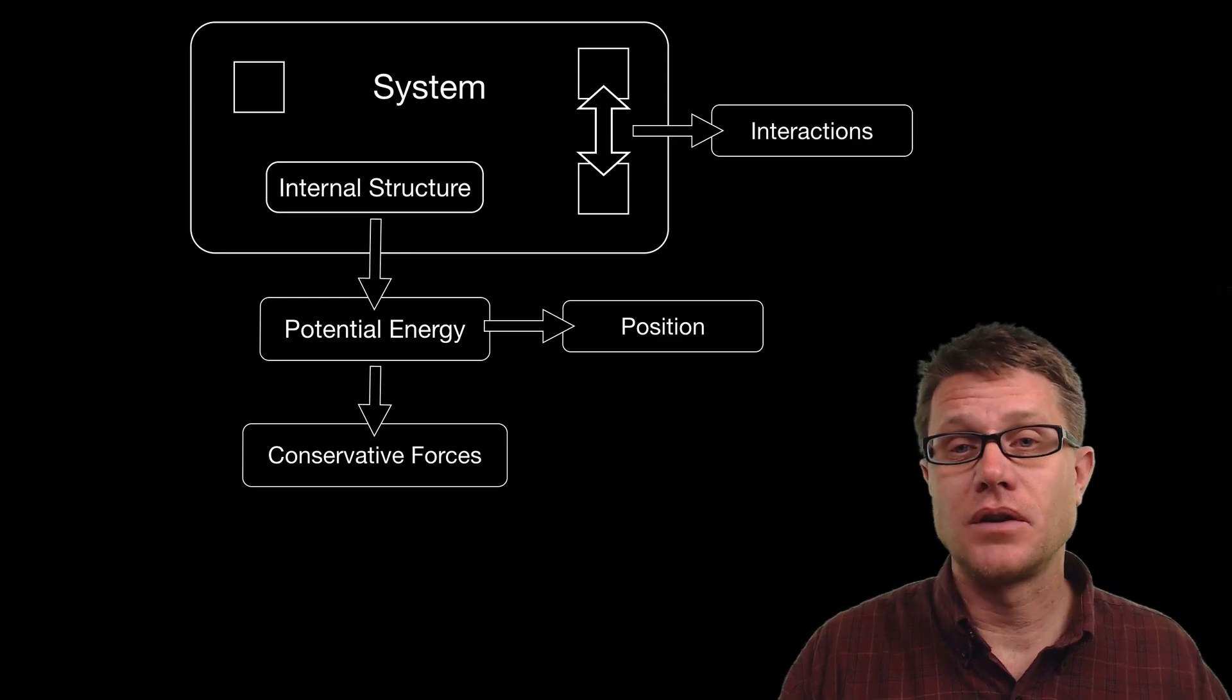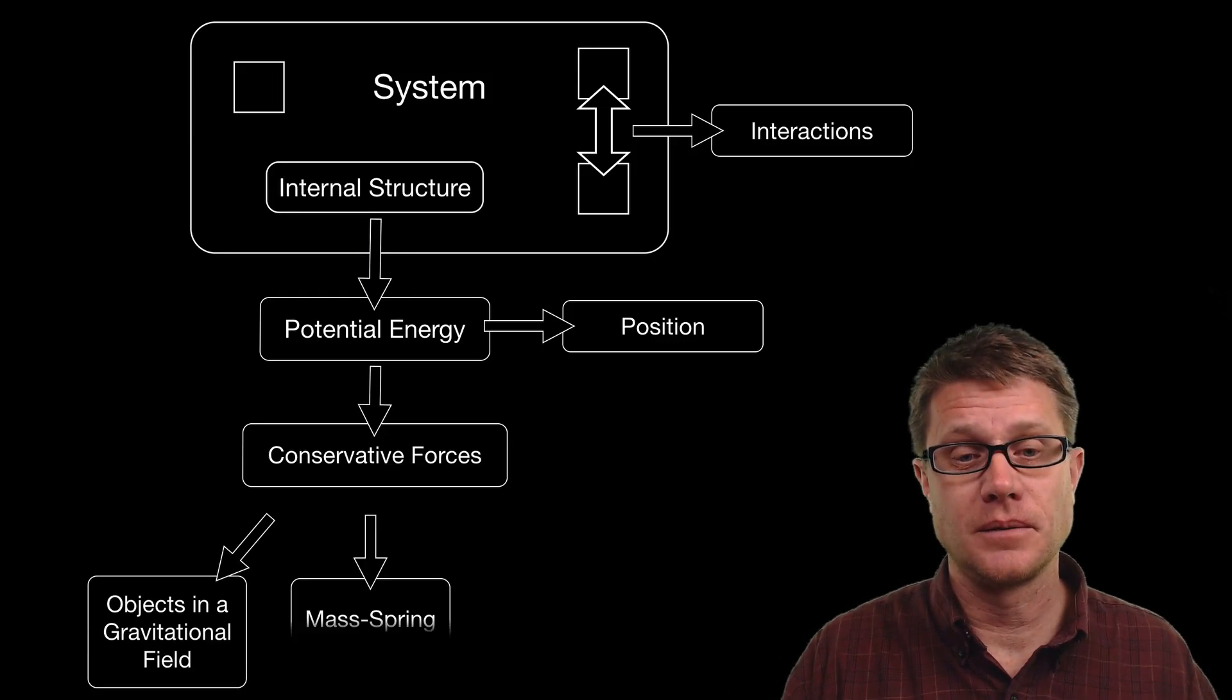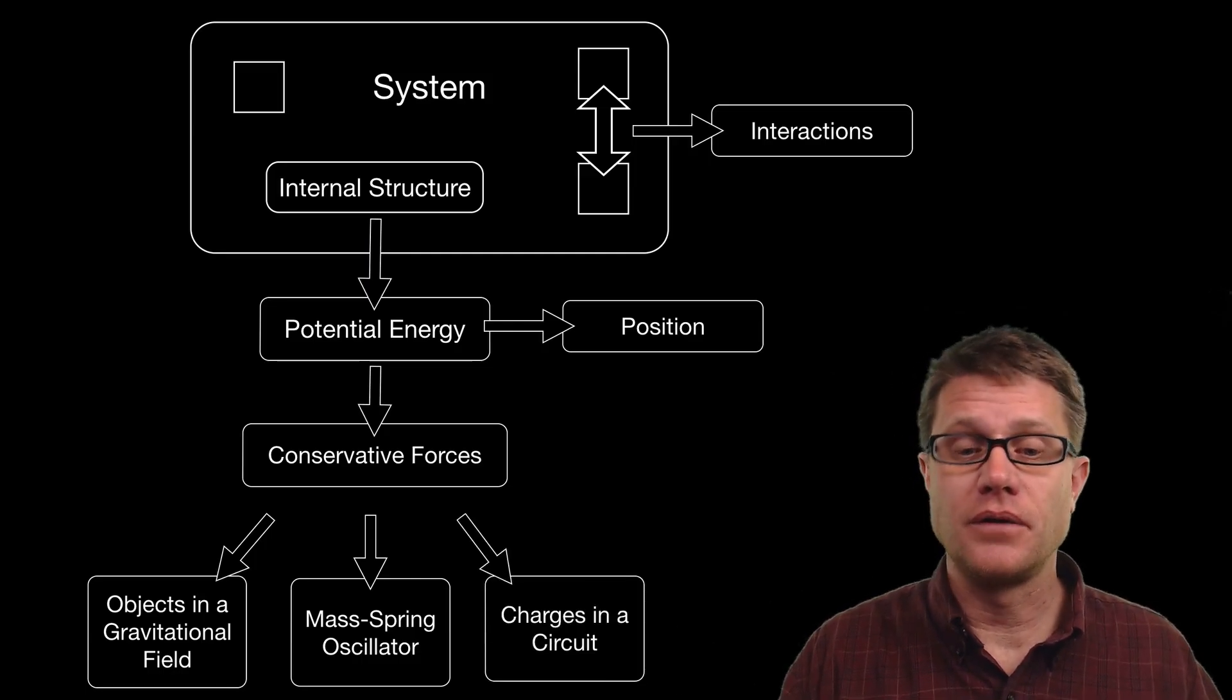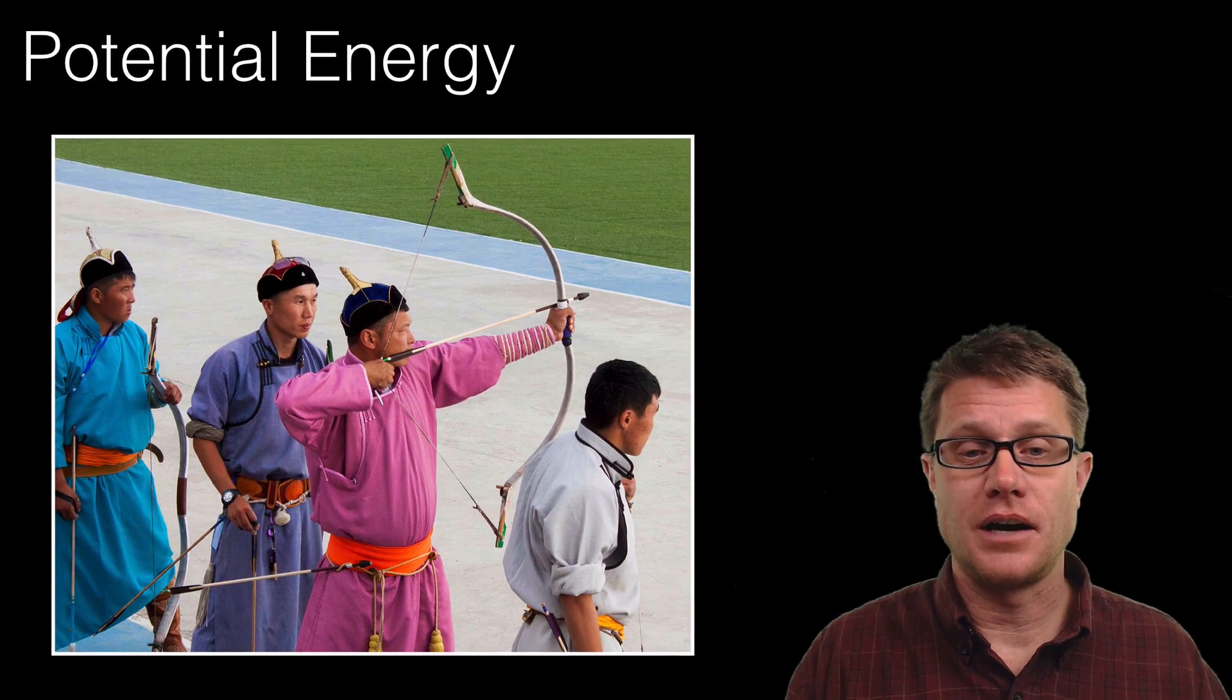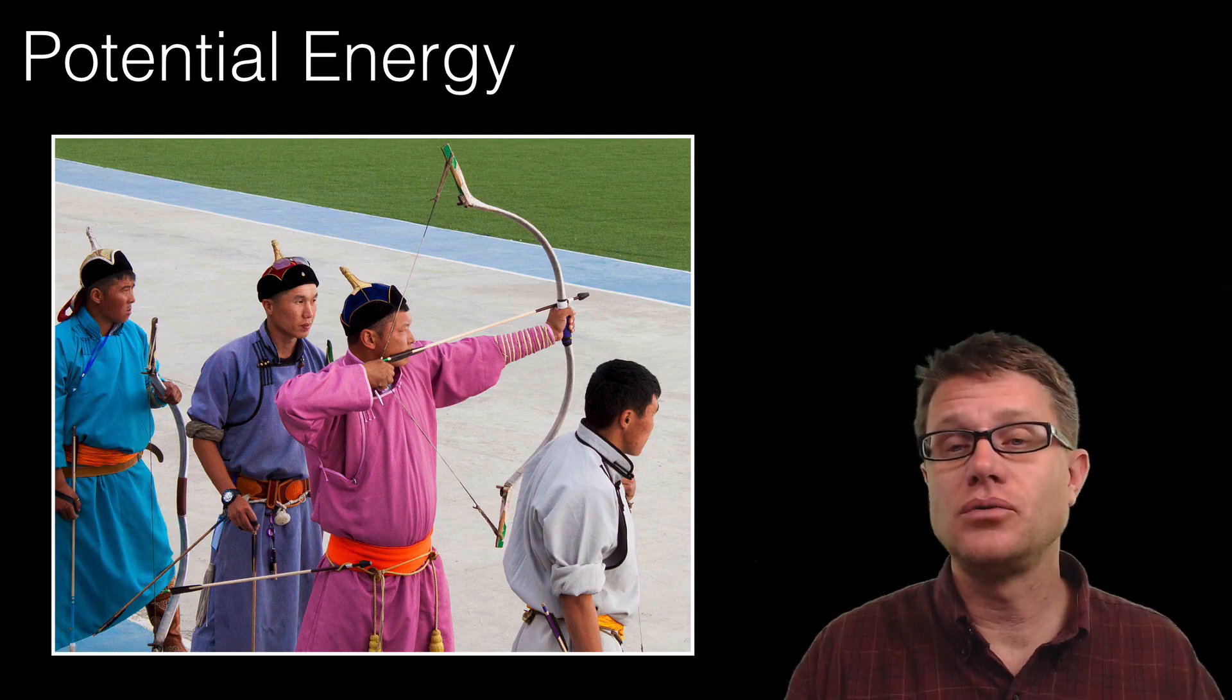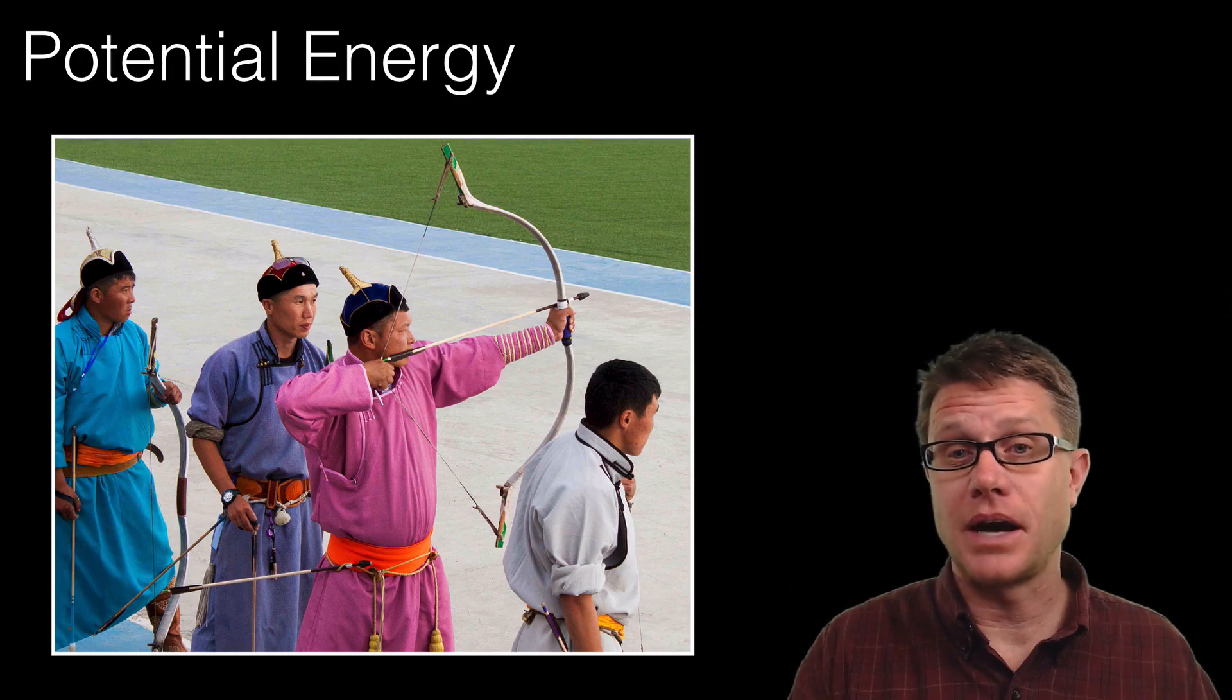The three conservative forces that we will talk about in AP Physics are going to be objects found in a gravitational field, mass spring oscillators, and also if we have a charge found within a circuit. Then that energy is going to be a conservative force and we can store potential energy in that object. Potential energy, if you think about it, is energy due to position, but it has to be position where we can get that energy back out again.